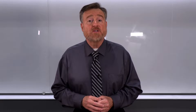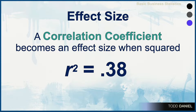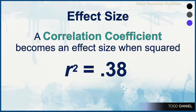To get that measure of effect size, we're going to start with the correlational coefficient itself. This is a correlational coefficient of negative 0.62 — these variables have a moderately strong negative relationship. The correlational coefficient becomes an effect size when we square it. The r-squared value is always positive, and in this case would be 0.38. So 38% of the variability in the y variable is accounted for by variability in the x variable.